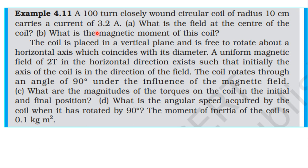From NCR Testbook, from the topic Moving Charges and Magnetism, example 4.1, number 9. A 100-turn closely wound circular coil of radius 10 cm carries a current of 3.2 Ampere. What is the field at the centre of the coil? What is the magnetic moment of the coil?